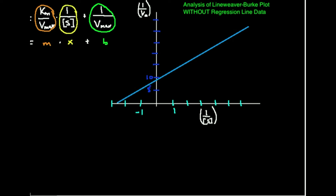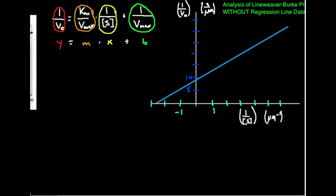Just so we know the units: let's say the x-axis is in inverse micromolars and the y-axis is in seconds per micromolar. What we're going to do — without a linear regression line equation — is estimate the Vmax and the Km value. Remember the Lineweaver-Burk equation: one over the initial rate equals (Km over Vmax) times (one over the substrate concentration) plus one over Vmax, which is in the form y = mx + b.